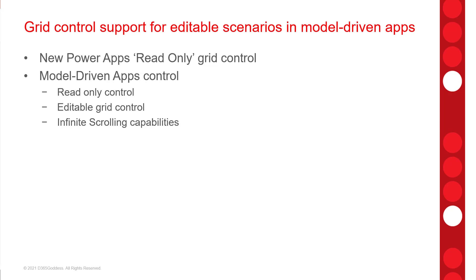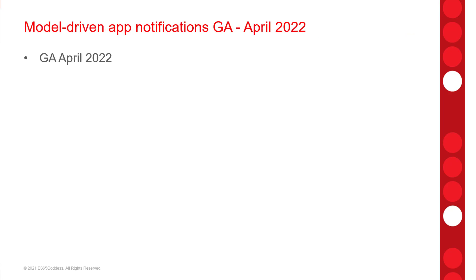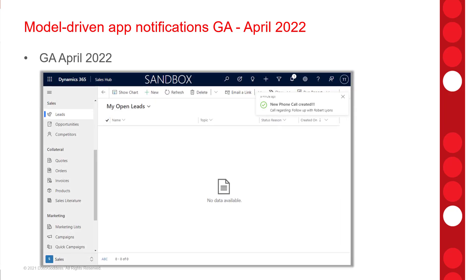The grid will be available for public preview in April of 2022. Now, the in-app notifications for model-driven apps — notifications shown in a model-driven app that can be created by Power Automate flows — have actually been in preview since July of 2021. I'm very excited to announce that this feature will be generally available in April of 2022. I did a video on this topic as well, so if you're interested in learning more about these model-driven app notifications, make sure you take a look at that video.